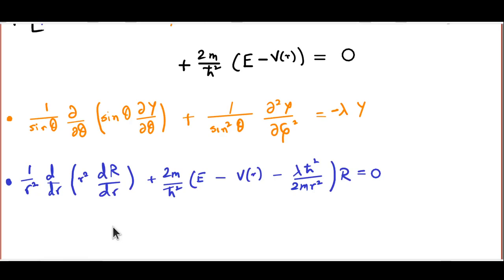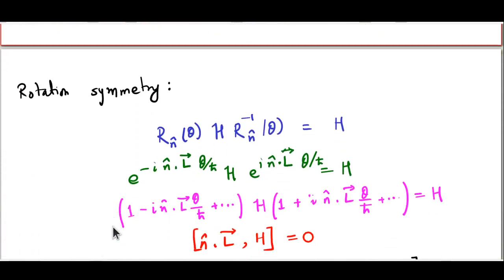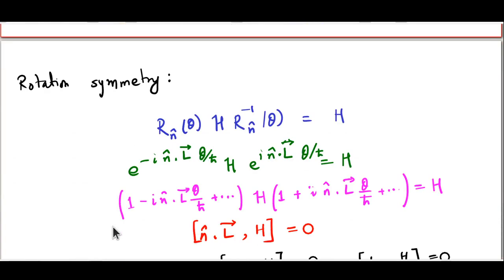We are going to try to solve the angular equation in some detail. But before we do, let us take a step back and understand why the separation occurs the way it does, and try to understand the physical significance of the angular equation. If you have a spherically symmetrical potential — that is, a central potential — then the Hamiltonian will be spherically symmetric, which means carrying out any rotation whatsoever, the Hamiltonian will not change.